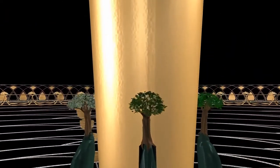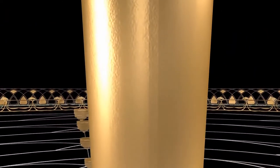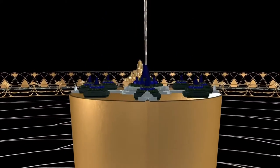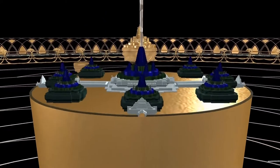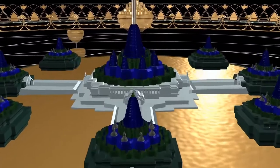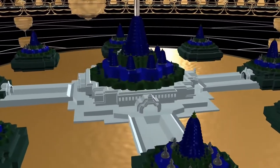In the very center of Ilavrata Varsha is Mount Meru, a golden mountain. Atop Mount Meru are the cities of important demigods: Lord Brahmara in the center, eight Dikpalas in the cardinal directions and subdirections.